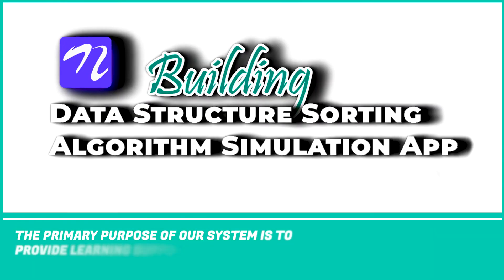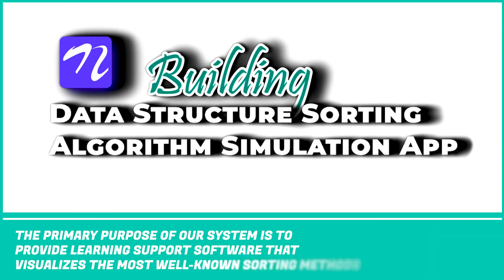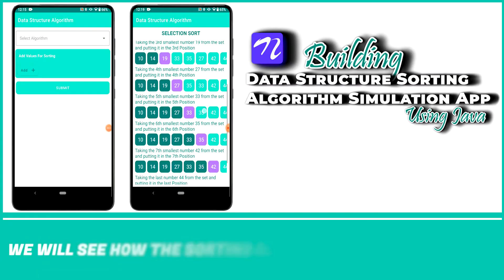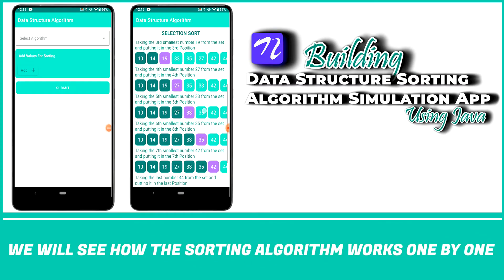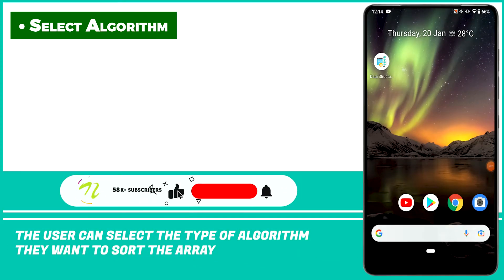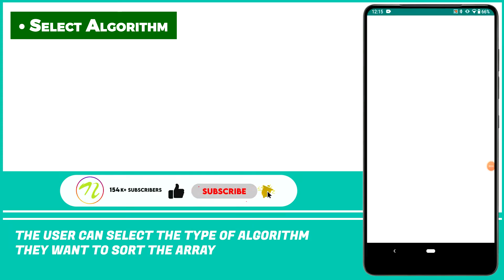The primary purpose of our system is to provide learning support software that visualizes the most well-known sorting methods. We will see how the sorting algorithms work one by one. The user can select the type of algorithm they want to use to sort the array.